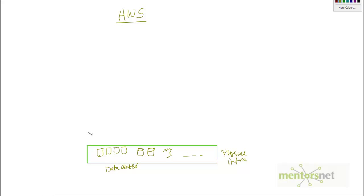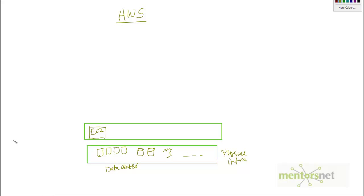On top of that physical infrastructure, they have written software called EC2, or Amazon Elastic Compute Cloud. Using Amazon Elastic Compute Cloud, you as a customer do not need to get a machine to your location. Instead, using Amazon EC2, you can rent a machine for a particular time and pay an hourly rate instead of an upfront capital cost.